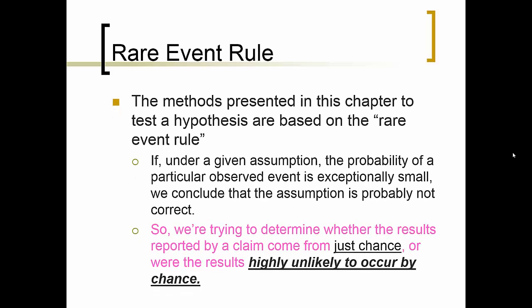The methods presented in this chapter to test a hypothesis are based on the rare event rule. If, under a given assumption, the probability of a particular observed event is exceptionally small, we conclude that the assumption is probably not correct. So we're trying to determine whether the results reported by a claim come from just chance, or were the results highly unlikely to occur by chance.